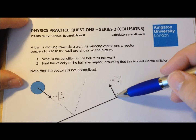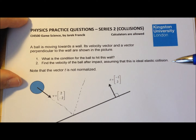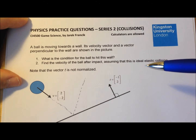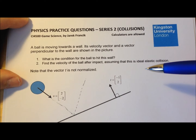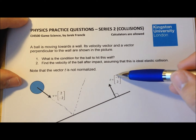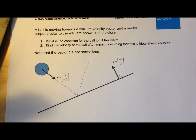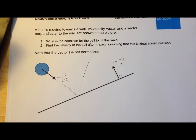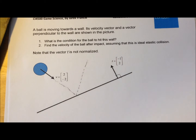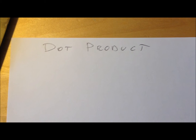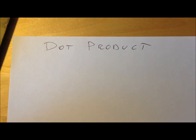This vector is perpendicular to the wall. In this exercise, this vector is not what you know as the normal vector, simply because it's not normalized. Before we go ahead with this exercise, I would like to discuss a little bit about the dot product and how you can use the dot product in exercises like this.